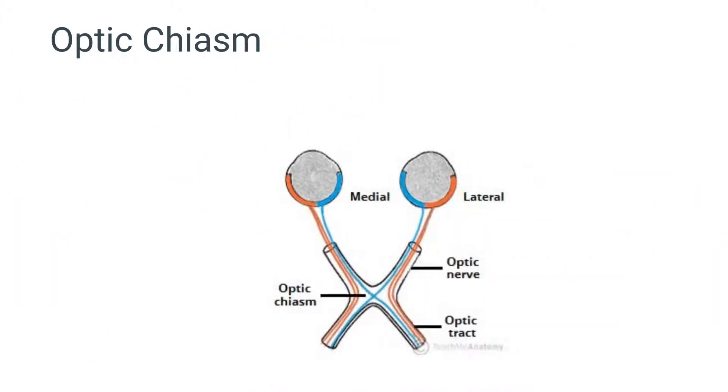At the optic chiasm, the nasal fibers cross to the opposite side and the temporal fibers do not.